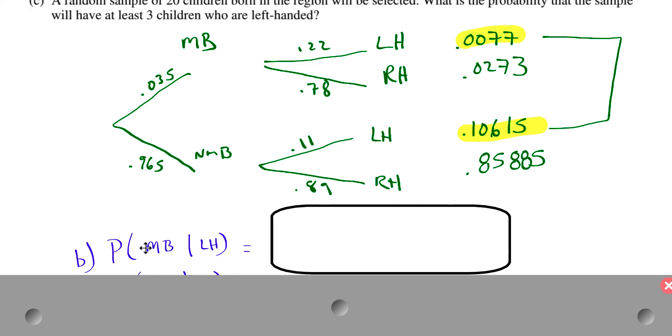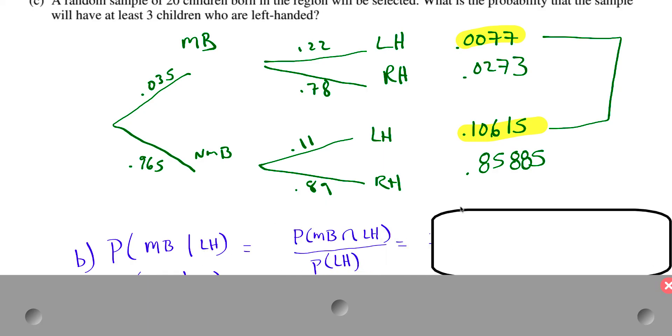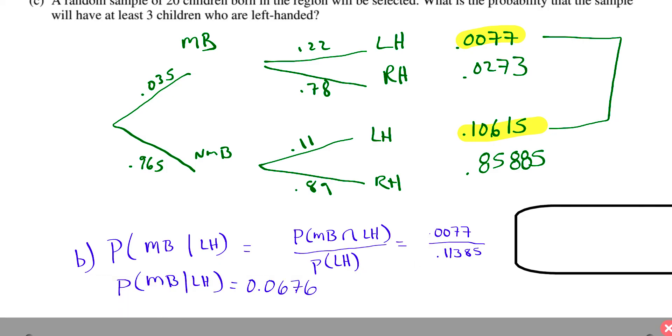So here's how I would break that out. We want the probability that a randomly selected child in the region is from multiple birth, given, as we just said, that it's left-handed. So here's all the left-handed. It's out of the left-handed. The multiple birth part is the top. So we want the probability that it's multiple birth, given that the child is left-handed. So that is going to equal this top number, the multiple birth, out of the total. So that equals the probability that it's multiple birth and left-handed, out of the probability that it's just left-handed. Final answer there. You got to work it out. What do we get when we work that out? 0.0676. And that should answer part B.